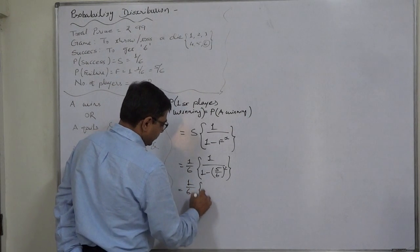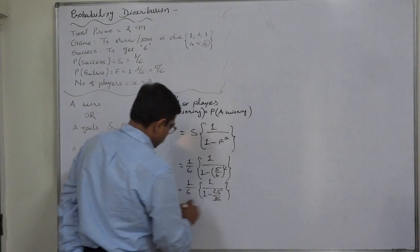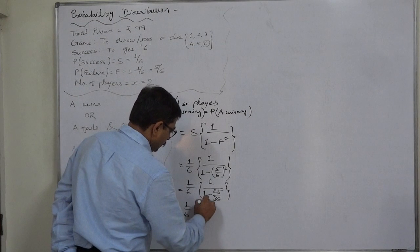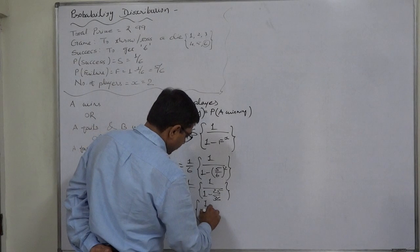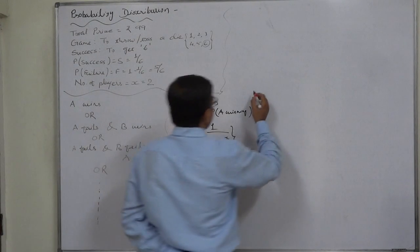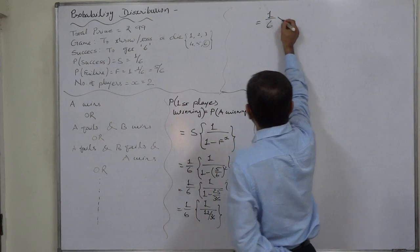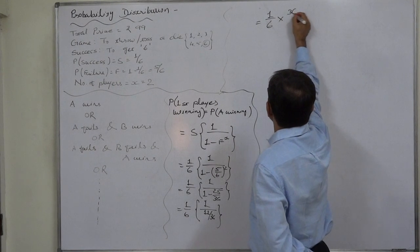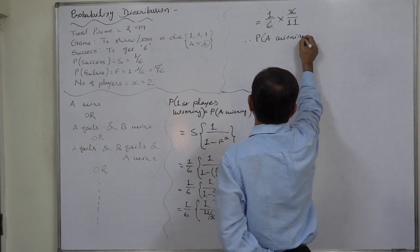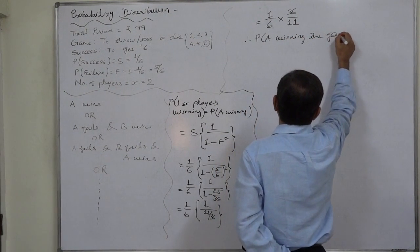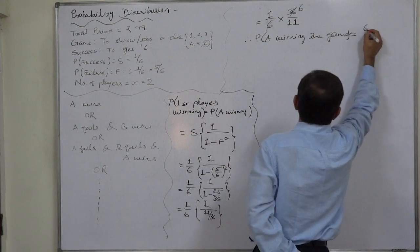So it is 1 by 6 into 1 upon 1 minus 25 by 36, 11 by 36. So it is 1 by 6 into 1 upon 36 into 1 minus 25, 11 by 36. So it is 1 by 6 into 36 by 11. So probability of A winning the game comes to 6 by 11.